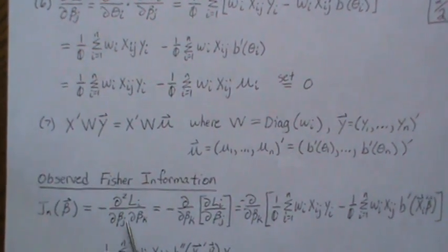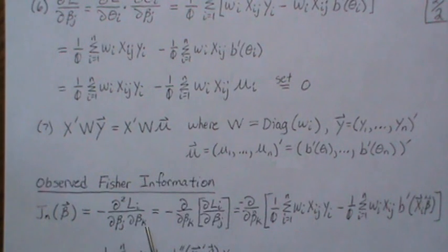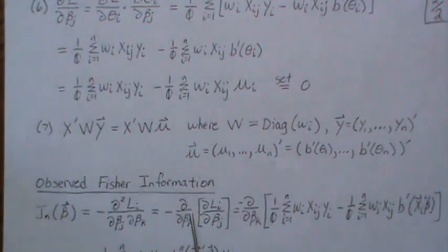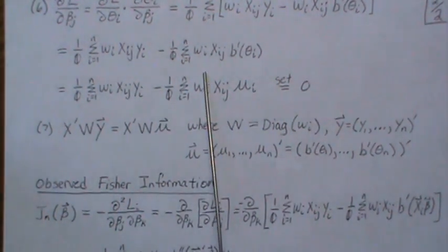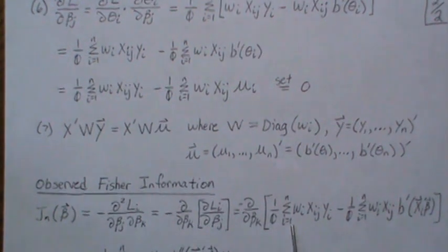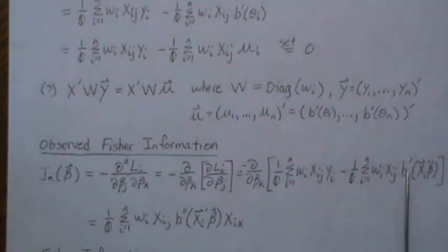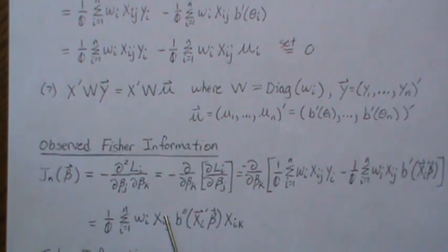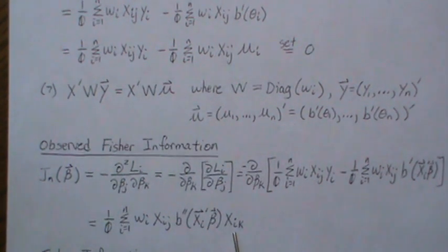The observed information, often called J, is the second derivative of L. We take all the partials with respect to beta_j and beta_k. This can be thought of as the partial with respect to beta_k of the first derivative with respect to beta_j. Plugging in the score expression and taking the derivative with respect to beta_k — there are no betas in the constant terms so they stay — we then take the derivative of the remaining term with respect to beta_k, which gives x_{ik}. The result is this expression for J.